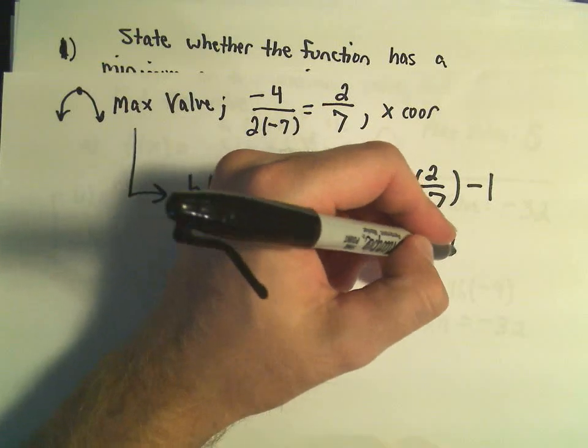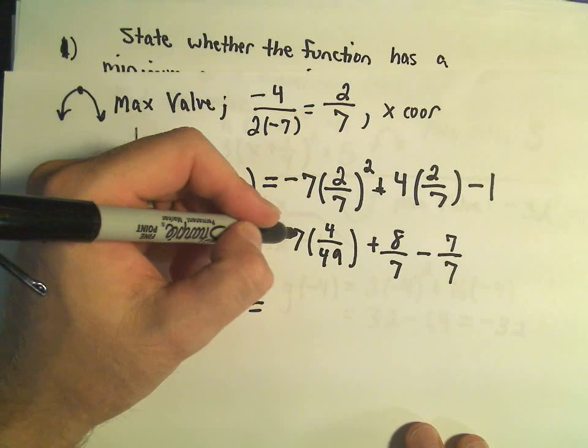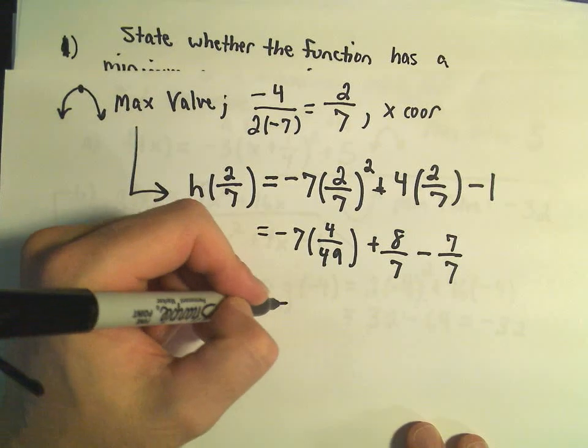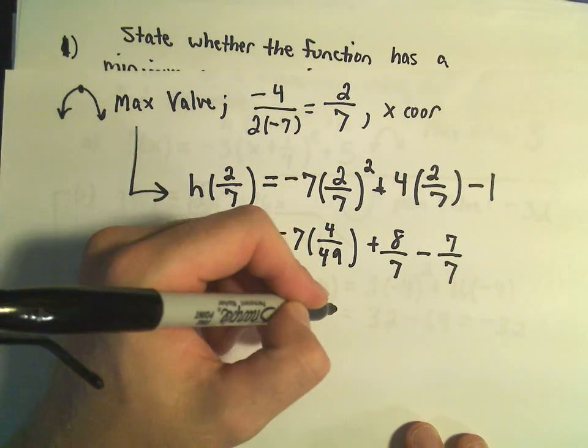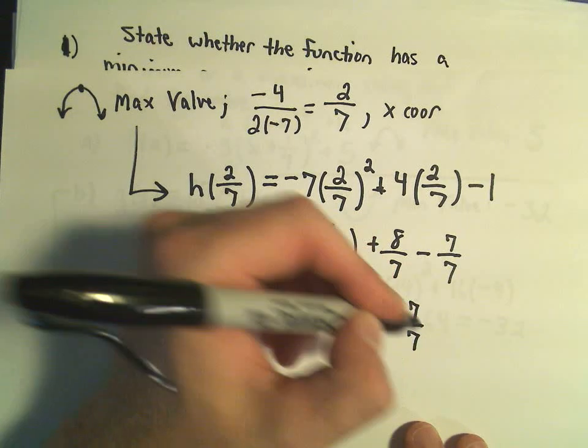I'm going to write 1 as 7 over 7, just so I can subtract those two. Notice 7 will go into 49 seven times. So this is actually negative 4 sevenths plus 8 sevenths minus 7 sevenths.